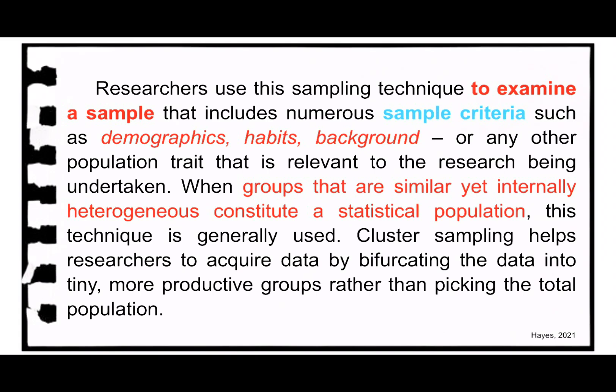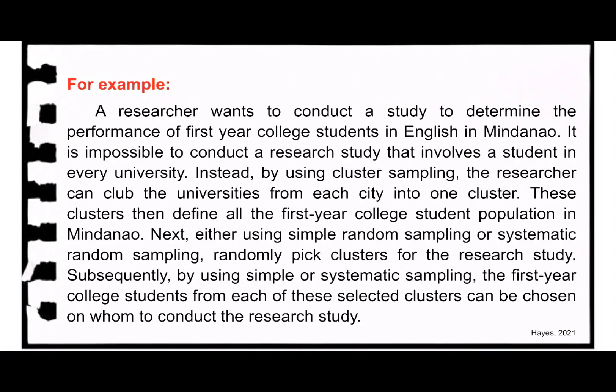When groups that are similar yet internally heterogeneous constitute a statistical population, this technique is generally used. Cluster sampling helps researchers acquire data by dividing it into smaller, more productive groups rather than picking the total population. For example, a researcher wants to determine the performance of first-year college students in English in Mindanao. It is impossible to involve students from every university, so by using cluster sampling, the researcher can club universities from each city into one cluster. These clusters define all first-year college students in Mindanao. Randomly pick clusters using simple or systematic random sampling, then select first-year students from each elected cluster for the study.